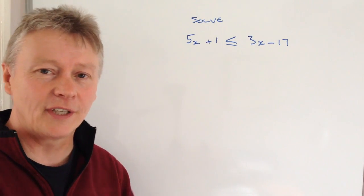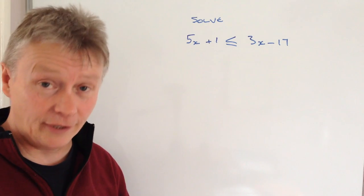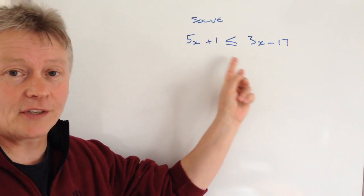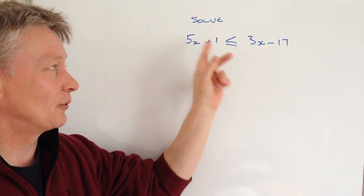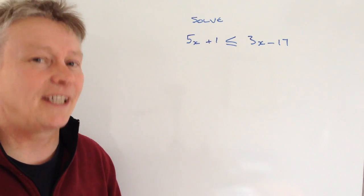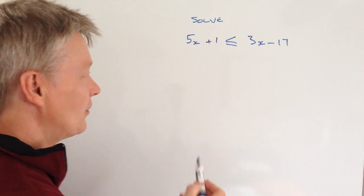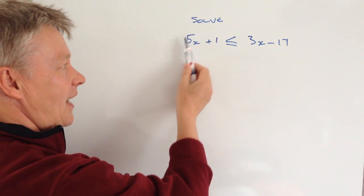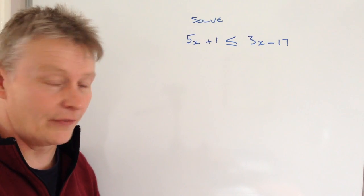Like a lot of these, we treat them like linear equations in that we need to balance around this less than or equal to sign in the middle. So if you imagine it's like an equal sign. What I'm going to do is I need to get x's on one side and numbers on the other.